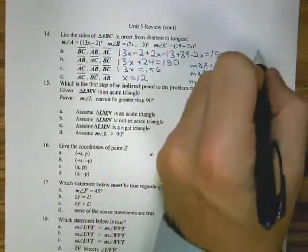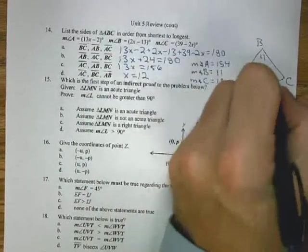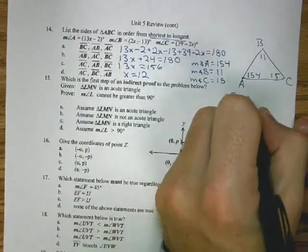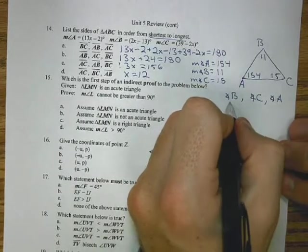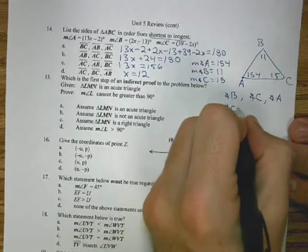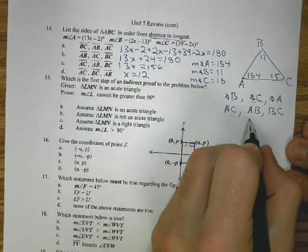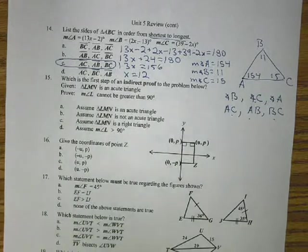Now that I have X is 12, I plug them in to find A, B, and C. Once you plug them in, you actually get C is 15, B is 11, and A is 154. If I draw my triangle ABC, I know that A is 154, B is 11, C is 15. I'm going from shortest to longest. My smallest angle is angle B, the next angle C, and then angle A. Opposite of B is AC, opposite of C is AB, opposite of A is BC. So the answer that's AC, AB, BC would be the shortest to longest, and that is answer C.